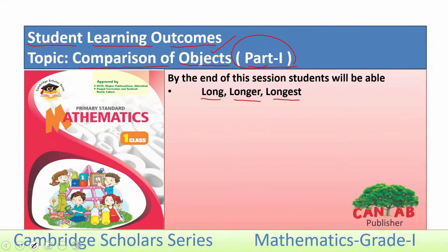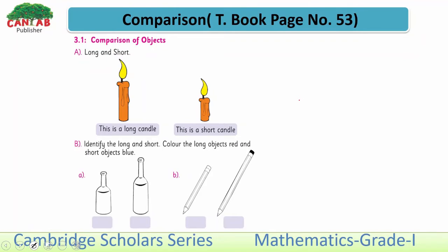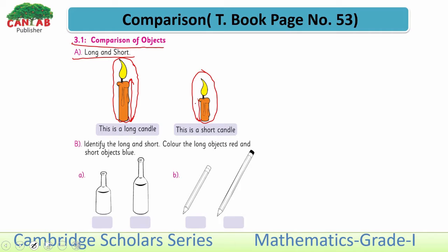Now come to the textbook, page number 53: Comparison of Objects. Look here — Long and Short. This is a candle. You can similarly observe objects at your home. The length of this candle is greater than the length of this second candle, so we can say this candle is the long candle and this candle is the short candle.